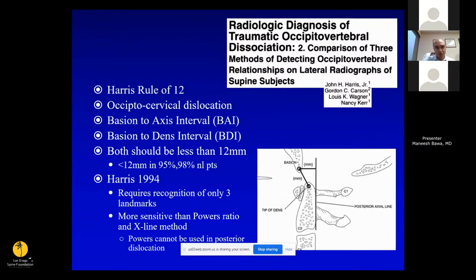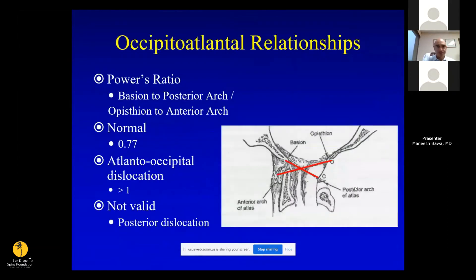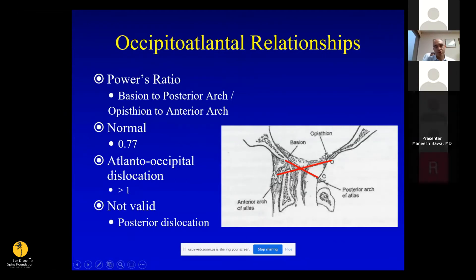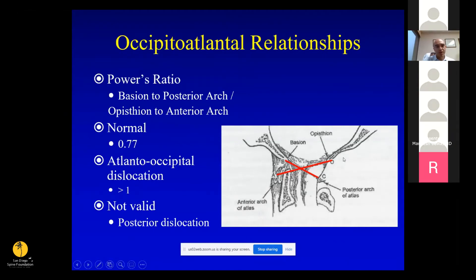The normal measurements to remember are the rule of 12: the distance from the basion to the odontoid should be less than 12 millimeters, and the distance from a line along the posterior aspect of the dens to the basion should also be less than 12 millimeters. This is a bit easier than using the Powers ratio, which is the ratio of the basion to the posterior arch over the anterior arch to the opisthion — and that ratio is not valid in posterior dislocations.